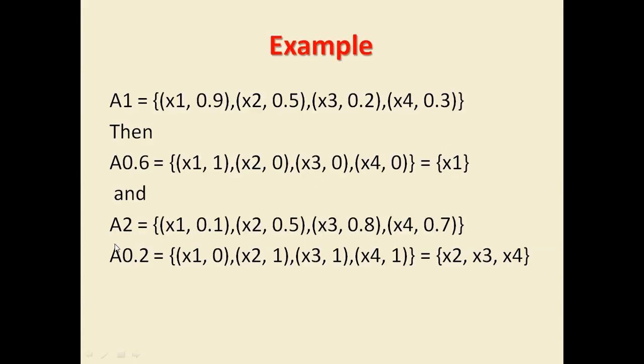Similarly, we have another example of fuzzy set A2 that is having x1, x2, x3, x4 with values 0.1, 0.5, 0.8, 0.7. Now the lambda value here is 0.2. All the elements who are having membership values greater than or equal to 0.2 will be contained in the new set. So 0.5 is true, 0.8 is true, 0.7 is true. The new set now has three elements: x2, x3, x4. Only x1 is not there because it has value less than 0.2.